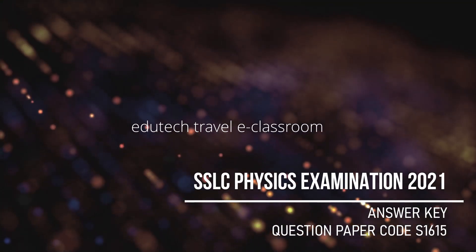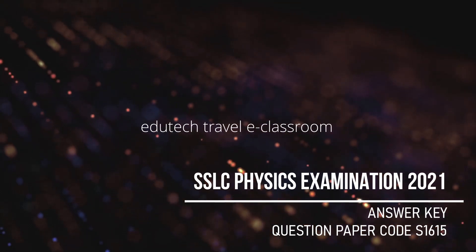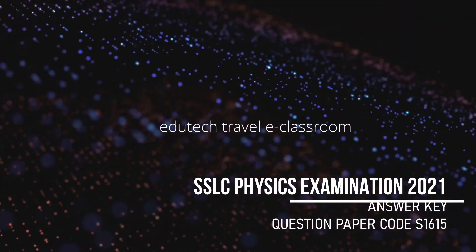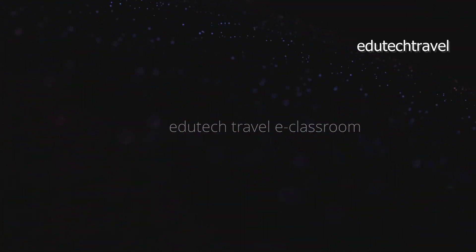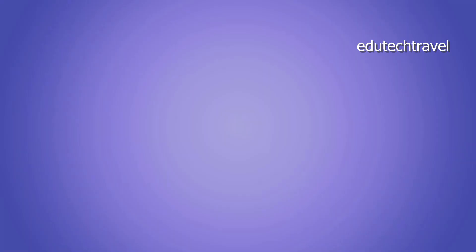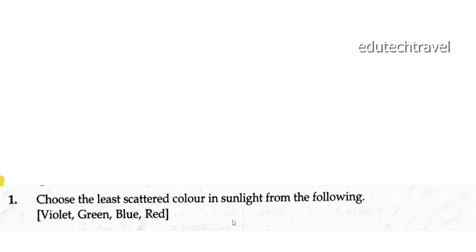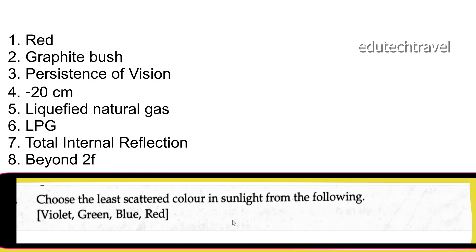Thank you so much for joining us. First question: choose the least scattered color in sunlight from the following — violet, green, blue, red. The answer is red.